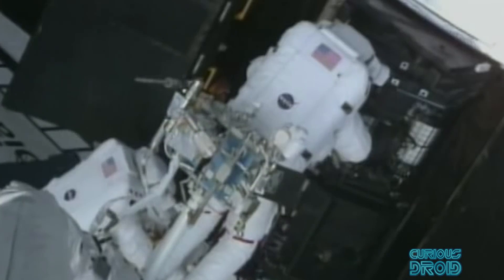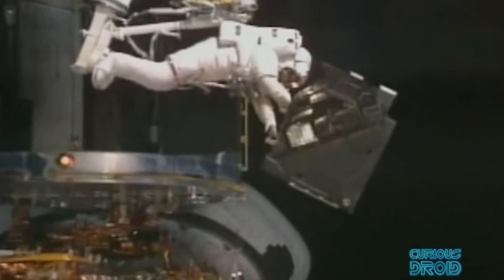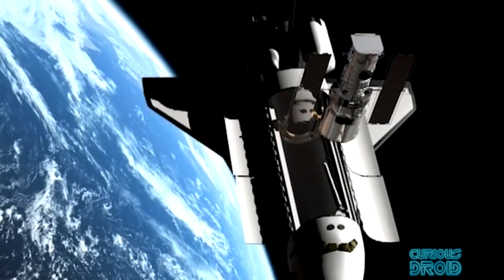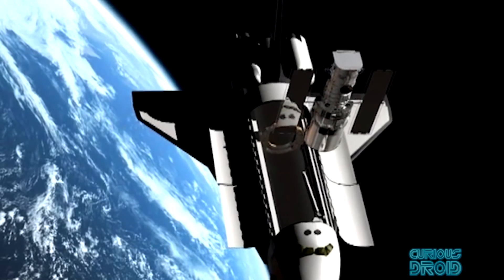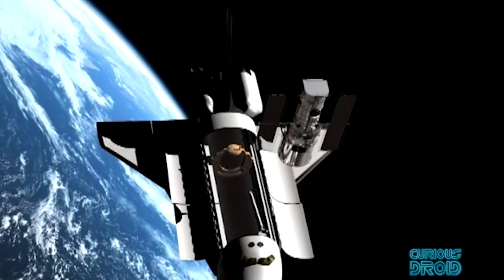The Hubble was designed to be serviced and upgraded in orbit, and over the last 25 years it has undergone five service missions. This was all done using the space shuttle, and at the end of each mission the shuttle would move the Hubble to a higher orbit.